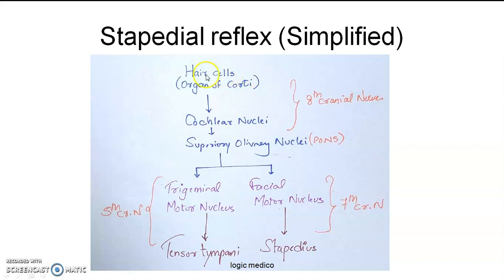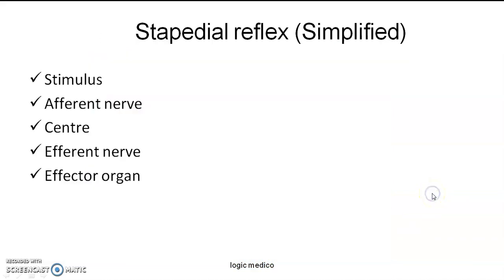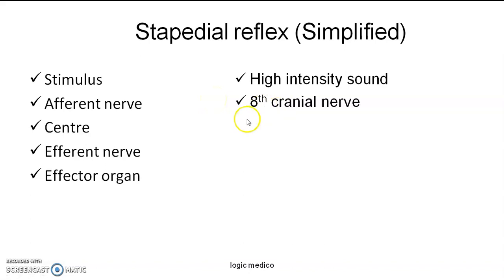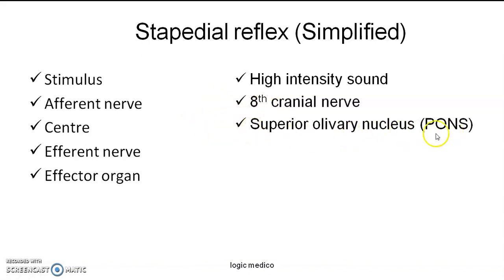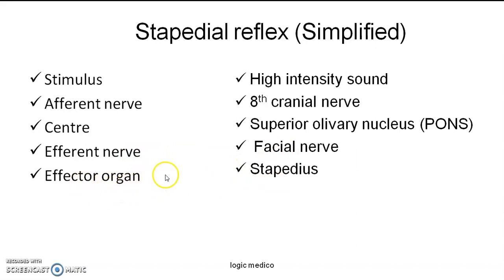In flowchart form for exams: hair cells of the organ of Corti are the receptor, reaching the cochlear nucleus and superior olivary nucleus via the eighth cranial nerve. Information then goes in two directions — trigeminal motor nucleus and facial motor nucleus. The trigeminal motor nucleus via the trigeminal nerve supplies tensor tympani, while the facial motor nucleus via the facial nerve supplies stapedius. In tabular form: stimulus is high intensity sound; receptor is organ of Corti; afferent nerve is eighth cranial nerve; center is superior olivary nucleus of pons and motor nucleus of facial nerve; efferent nerve is facial nerve; effector organ is stapedius muscle.